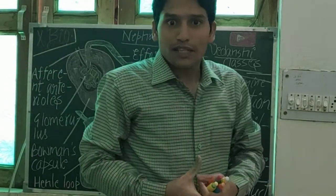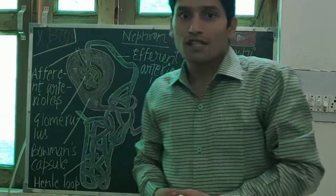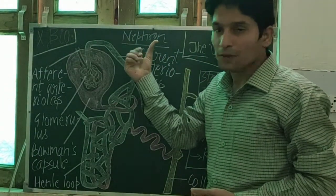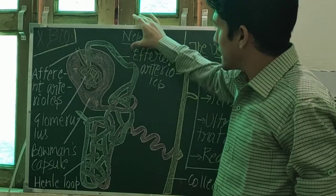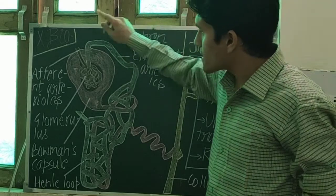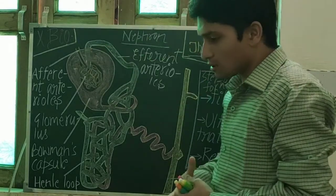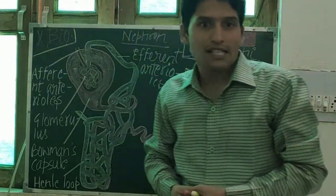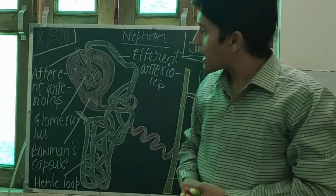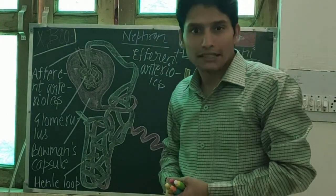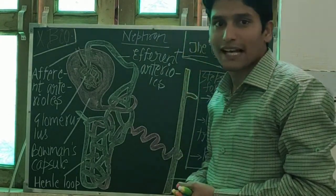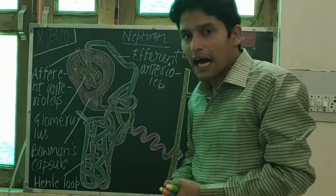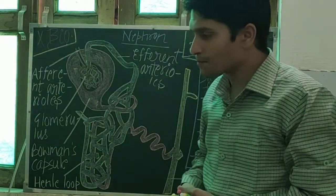Hello, good morning students. Welcome once again in 10th standard biology. Yesterday we had discussed about excretion — the meaning of excretion and the diagram of the kidneys, the human excretory system. Kidneys are our excretory organs.